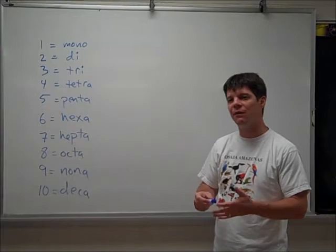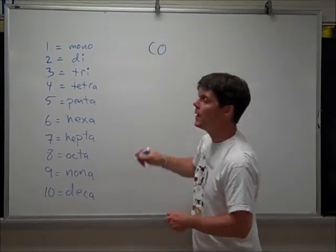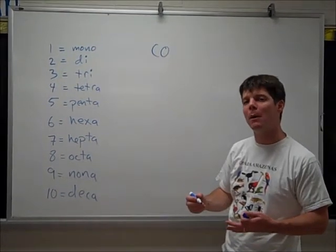Let's look at some examples. If I have the compound CO, the name of this will be carbon monoxide.